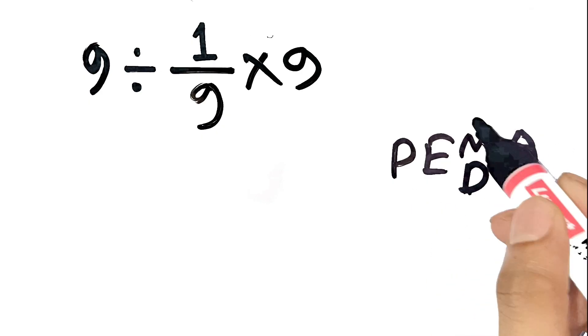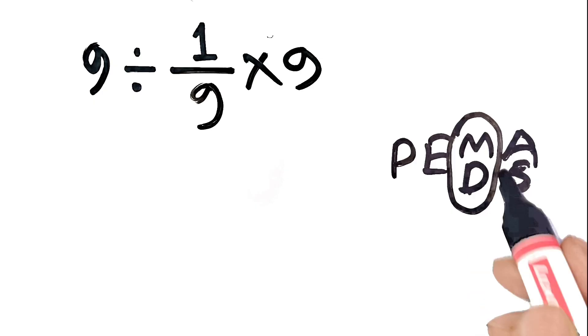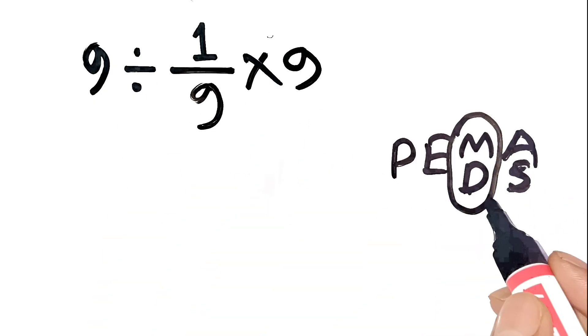And here's the important part. Multiplication and division have equal priority, so we solve them left to right.